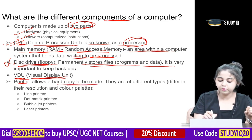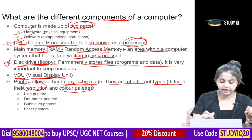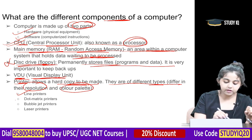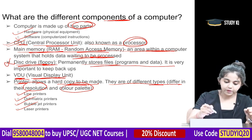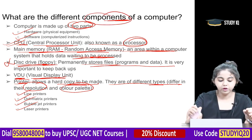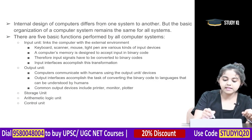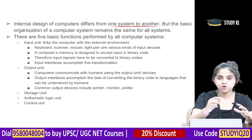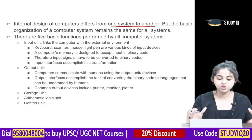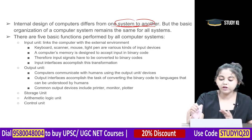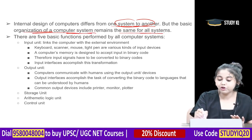The internal design of a computer differs from one system to another, but the basic organization remains the same. There are five basic functions performed by all computer systems: input unit, output unit, storage unit, arithmetic logic unit, and control unit.